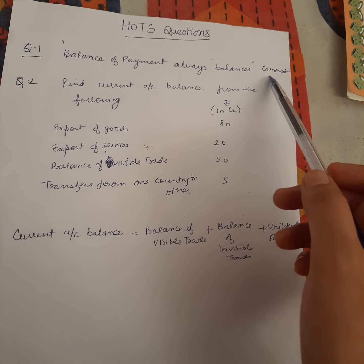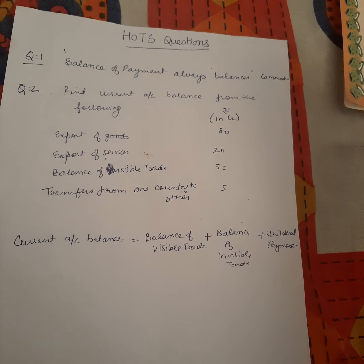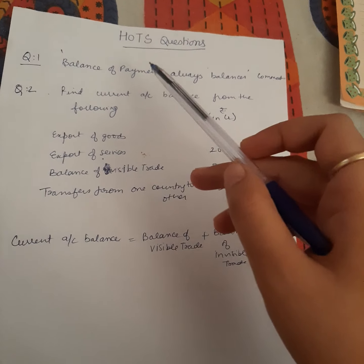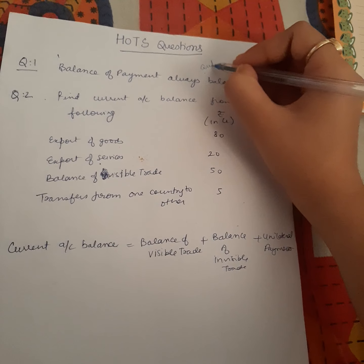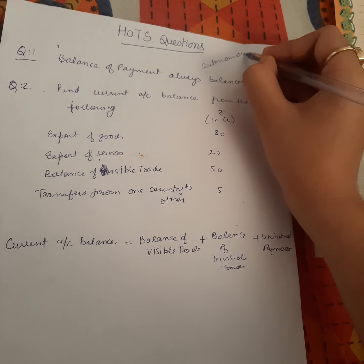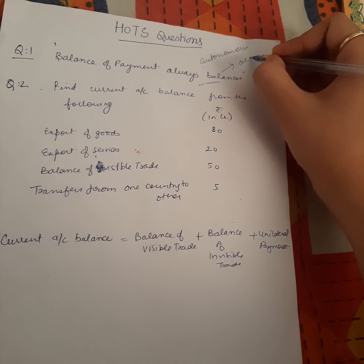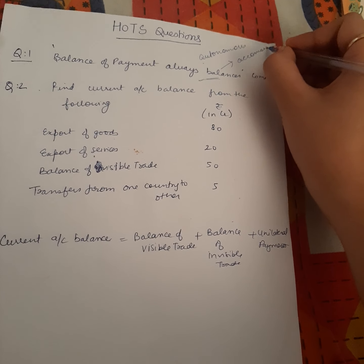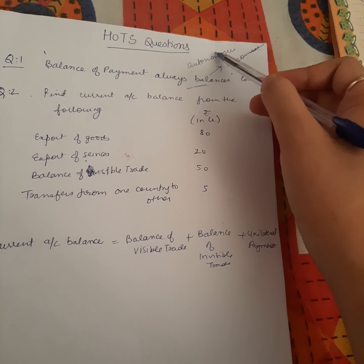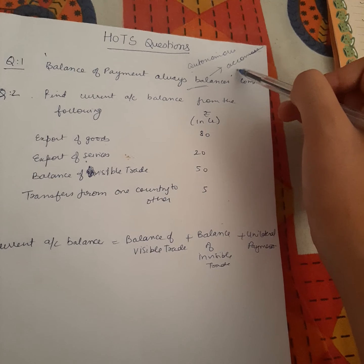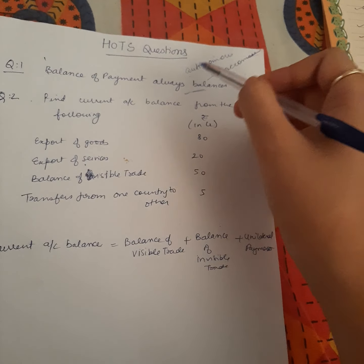What you have to write here is about accommodating and autonomous items. Balance of payment can be in disequilibrium because of autonomous items, but it will always balance because of accommodating or below-the-line items. If there is a current account deficit because of imports or exports, it will be balanced by borrowings, which is an accommodating item. So you have to write about autonomous and accommodating items with an example.